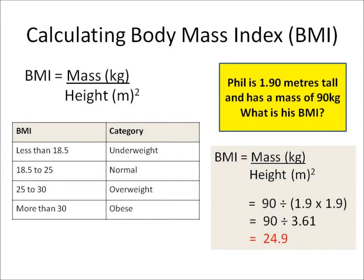Let's look through this example. Phil is 1.9 meters tall and has a mass of 90 kilograms, and we need to work out his BMI.